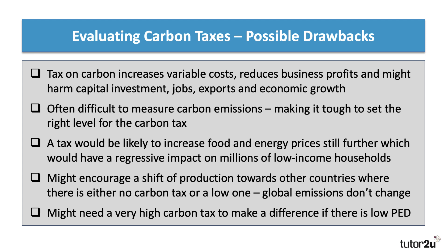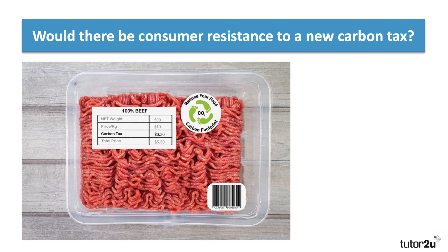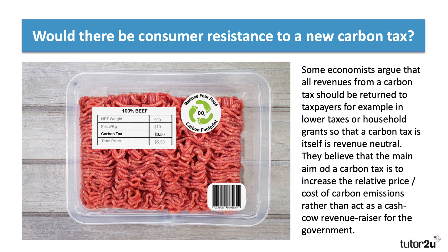There's the issue of how hard the tax needs to be to really change behaviour — this is where you can link in with year 12 economics. If demand for something has a low price elasticity of demand, it's going to take quite a big carbon tax to make a real difference. There could be some consumer resistance to a new carbon tax. Some economists argue that all revenues from a carbon tax should be returned to taxpayers, either as a lower income tax or perhaps an annual grant — they argue the carbon tax should be revenue neutral — and that the main aim is to increase the relative price of emissions rather than be a cash cow revenue raiser for the government.